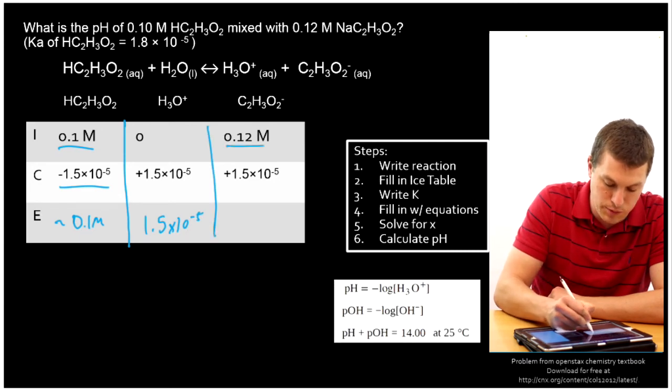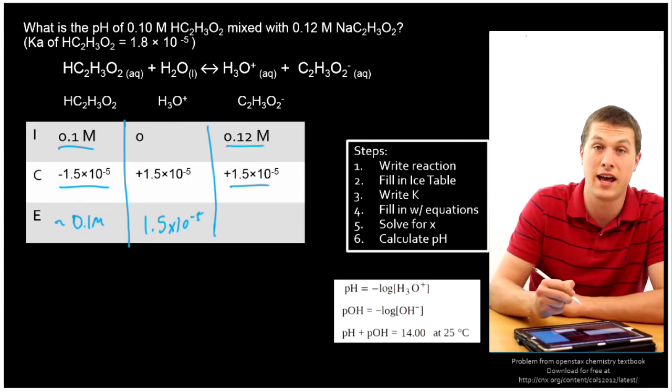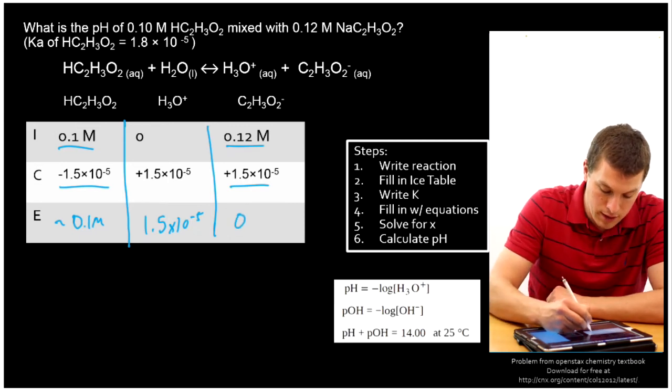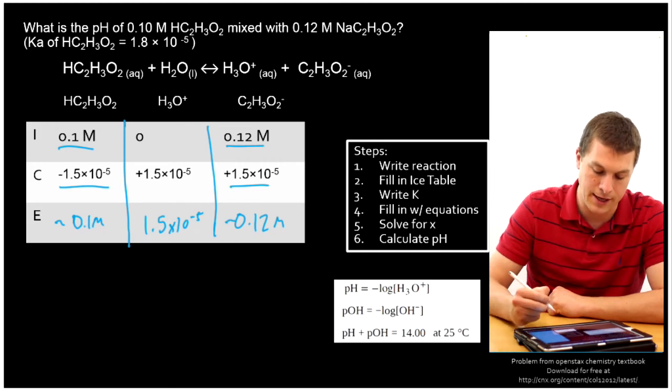For this guy, 0 plus 1.5 times 10 to the minus 5 just gives me 1.5 times 10 to the minus 5. And once again, 0.12 plus that, it's such a small number being added to 0.12. Go ahead, plug in your calculator if you don't believe me, but it won't make much of a difference.